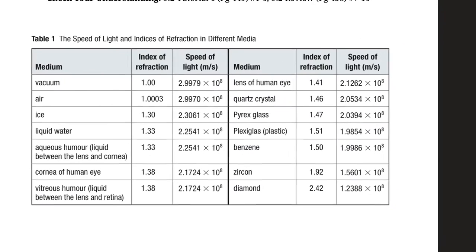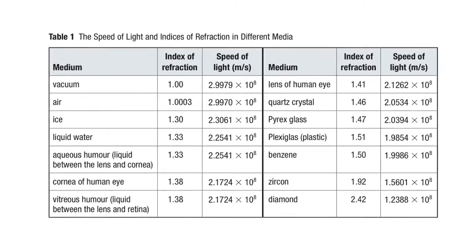Going over here very quickly, we have a table of all the different speeds of light in different materials. In a vacuum we know it's about 3×10⁸ meters per second, and you can see it's slower in different things. Air is very close to the speed of light in a vacuum because there aren't many electrons for light to interact with, whereas something like benzene is about 2×10⁸ meters per second — about two-thirds the speed of light.